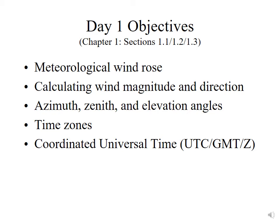Welcome to Atmos 5000, Day 1. We're going to be focusing on Chapter 1, Sections 1.1, 1.2, and 1.3 from Roland Stoll's textbook, Practical Meteorology. The objectives for today are to understand the naming conventions used to describe the wind through the meteorological wind rows, learn how to calculate wind magnitude and direction from its individual components, define the azimuth, zenith, and elevation angles, and introduce the concept of time zones and coordinated universal time.